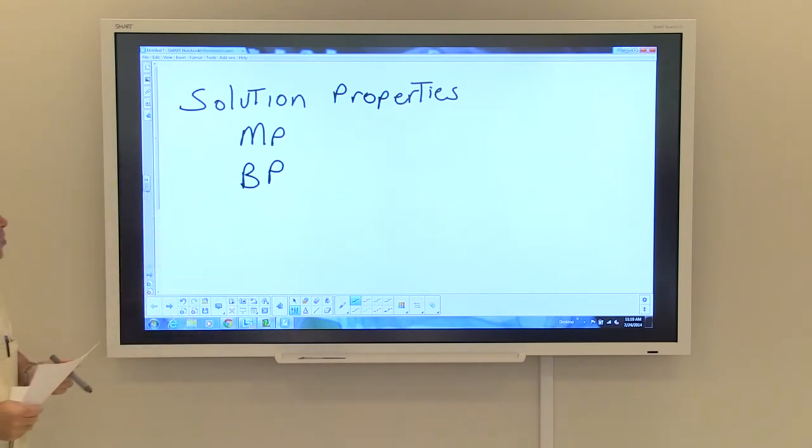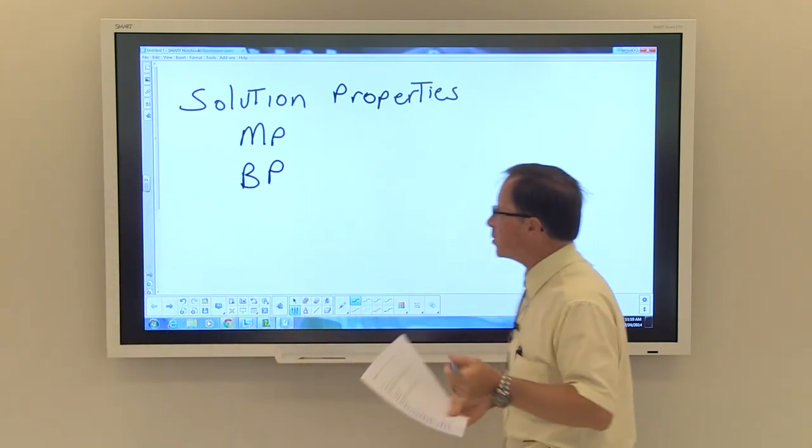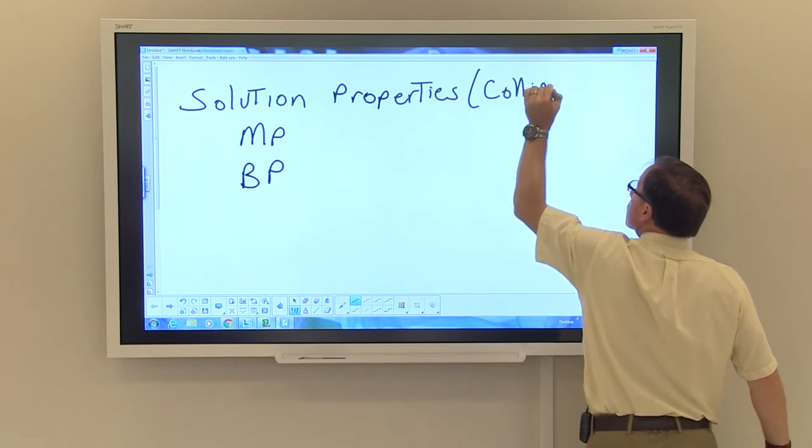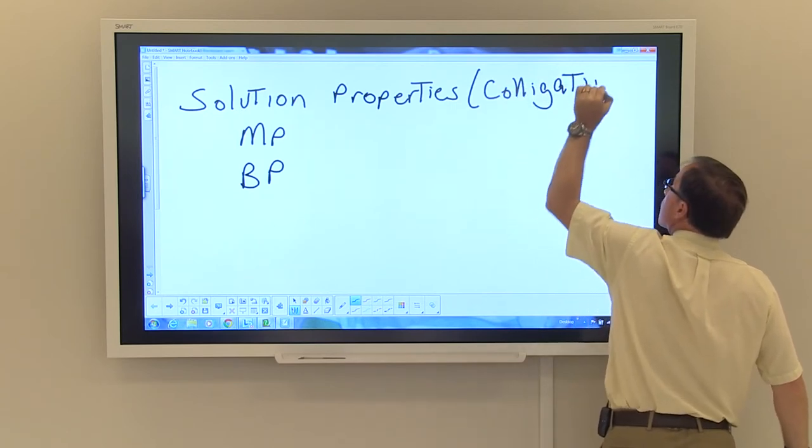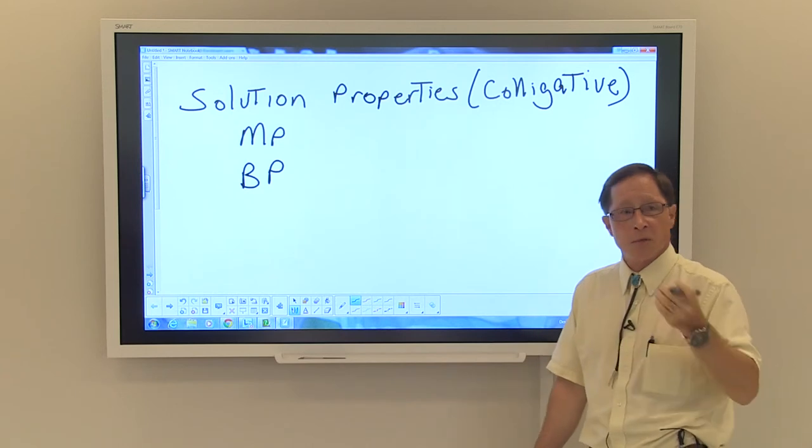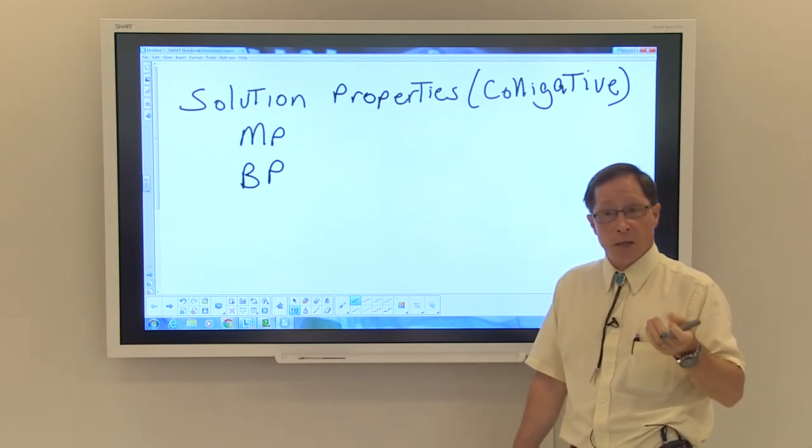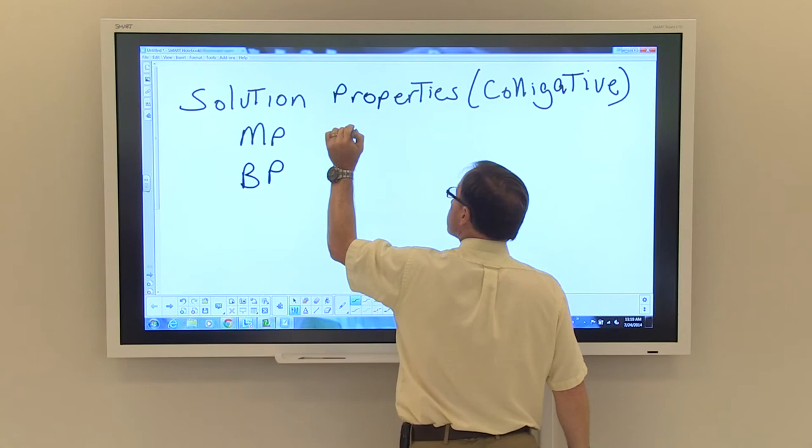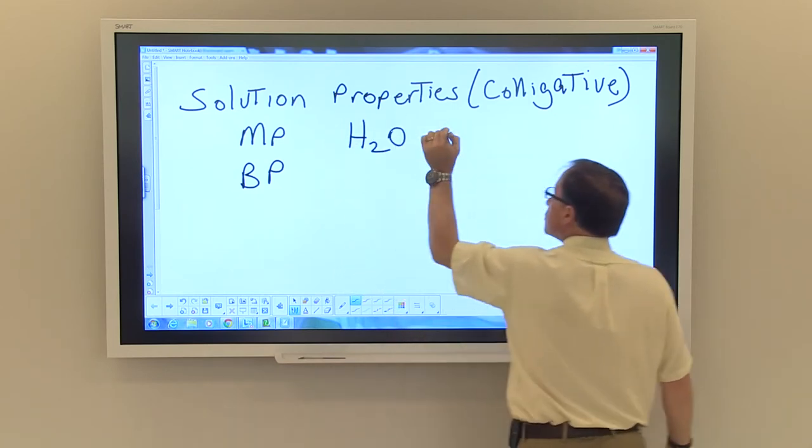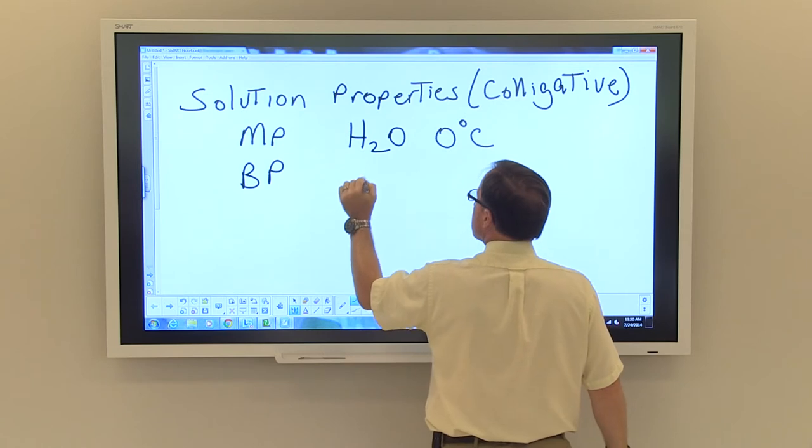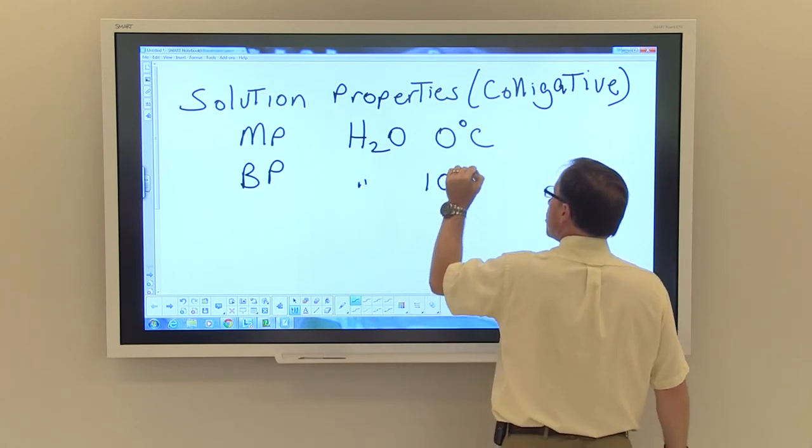Let's finish up with the discussion of solution properties. Let's talk a little bit about these. Solution properties are sometimes called colligative properties. And what that means is that the amount of solute in a solution will change the properties of that solution. We all know that water freezes at 0 degrees Celsius. We know that water boils at 100 degrees Celsius.